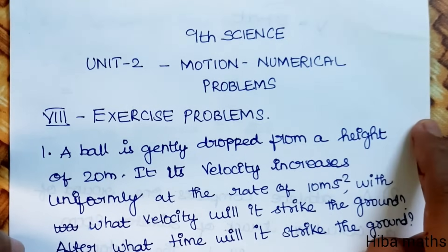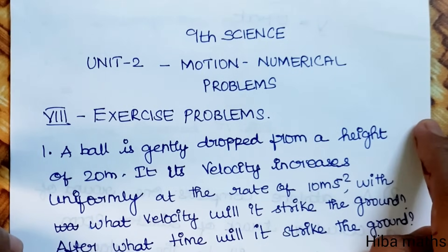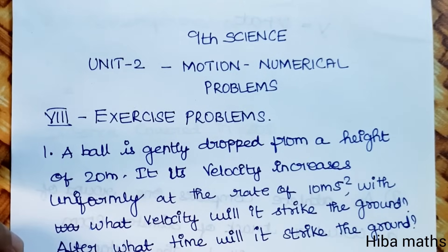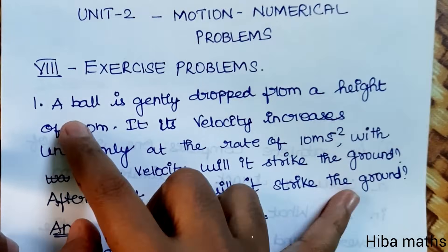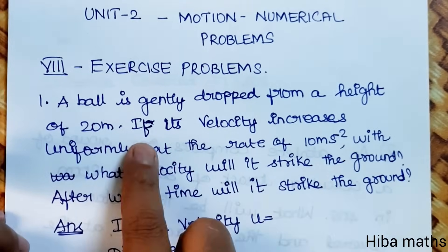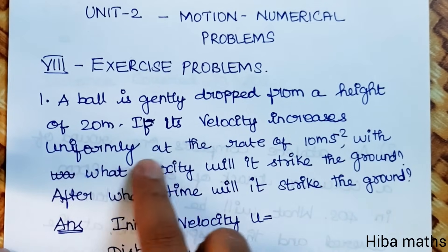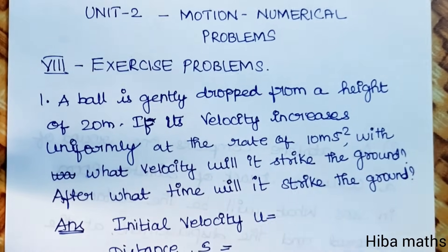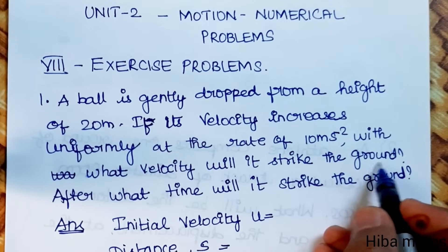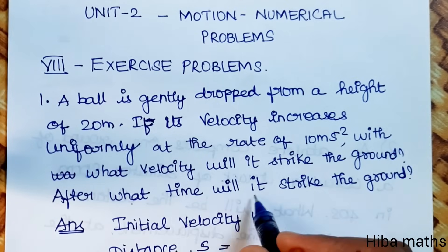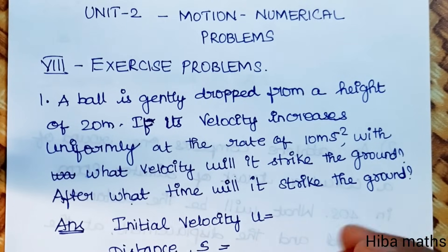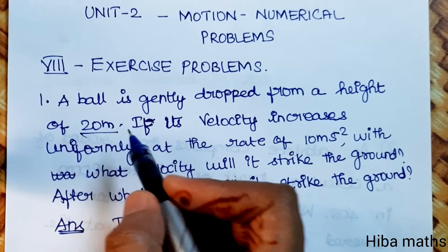Hello students, welcome to Hibamak Study Time. 9th standard science, Unit 2: Motion — numerical problems. First question: a ball is gently dropped from a height of 20 meters. If its velocity increases uniformly at the rate of 10 meters per second square, with what velocity will it strike the ground, and after what time will it strike the ground?